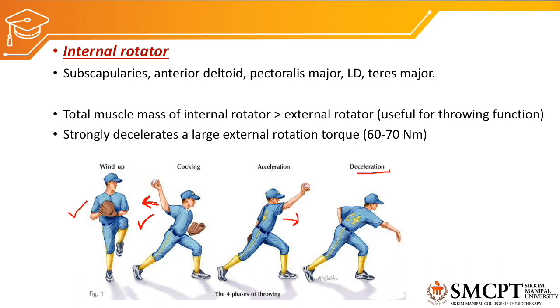These external and internal rotators of the glenohumeral joint play important roles during throwing activities. We need to remember that internal rotators are much stronger compared to external rotators of the glenohumeral joint.